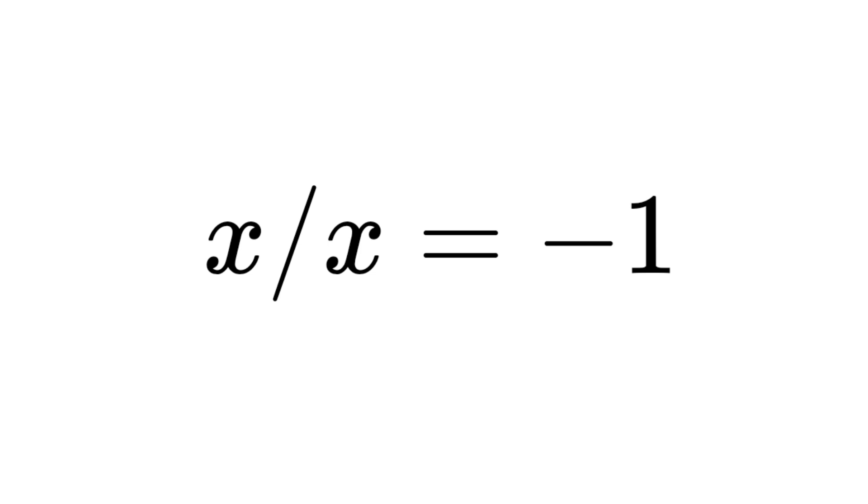To solve x divided by x equals negative one and find the value of x that satisfies this equation, we must go beyond traditional mathematics. For real and complex numbers, at first glance, it seems this equation has no solution, a so-called contradiction. But let's break it down step by step.